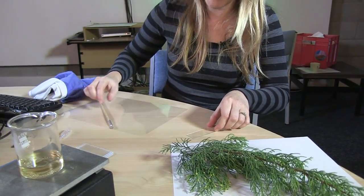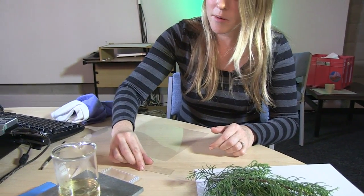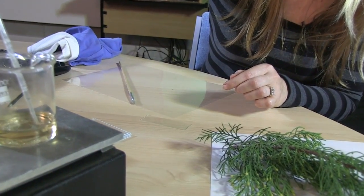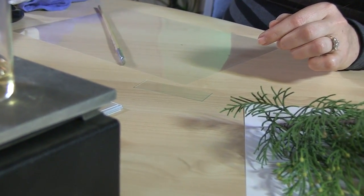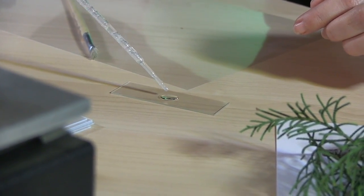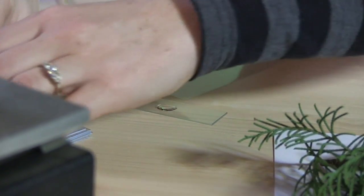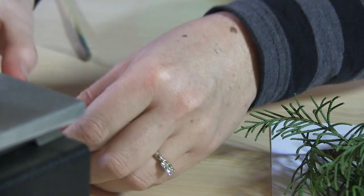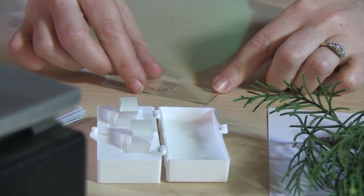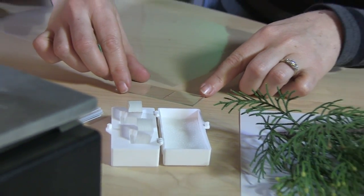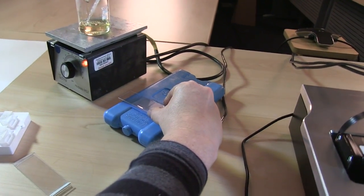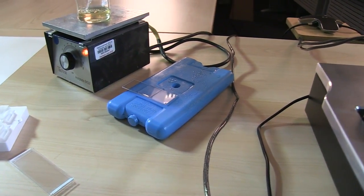And then once we have that sample material on the slide we place a drop of glycerin jelly, liquid glycerin jelly onto the slide like so and then cover slip and allow that to spread, and so then we cool the slide to encourage the glycerin jelly to set quick.